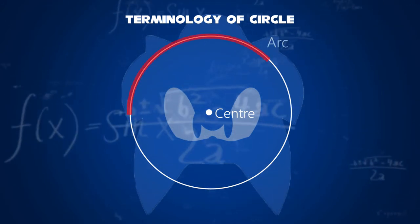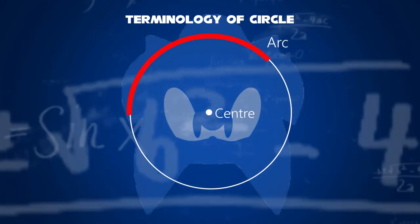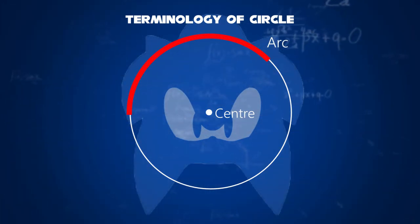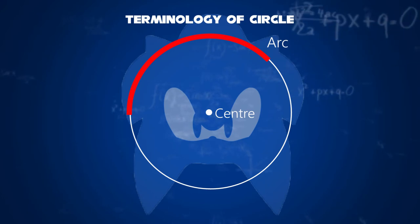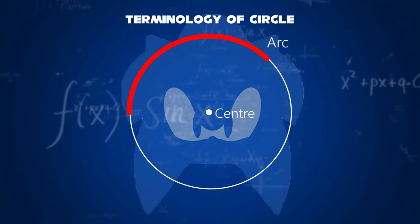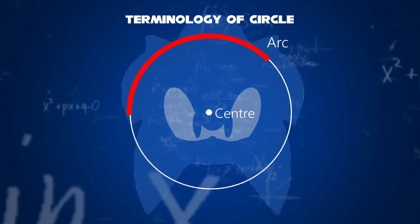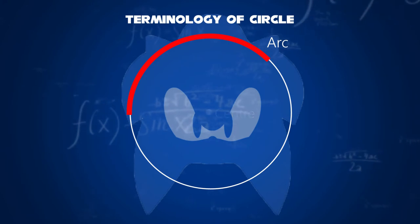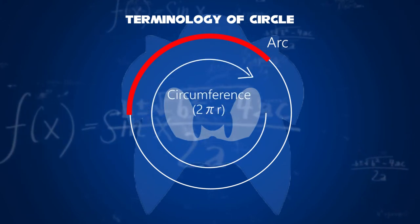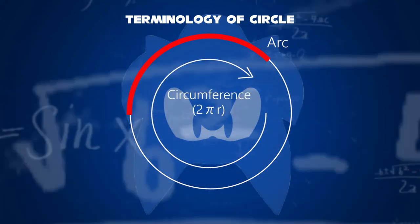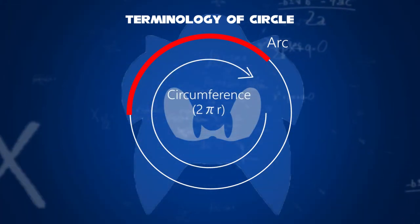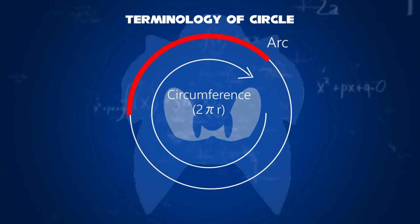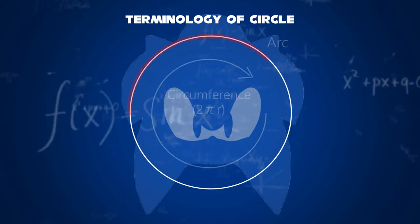Seventh, an arc is any connected part of a circle. Specifying two endpoints of an arc and a center allows for two arcs that together make up a full circle. Eighth, the length of one circuit along the circle — that is 2πr — is called the circumference.